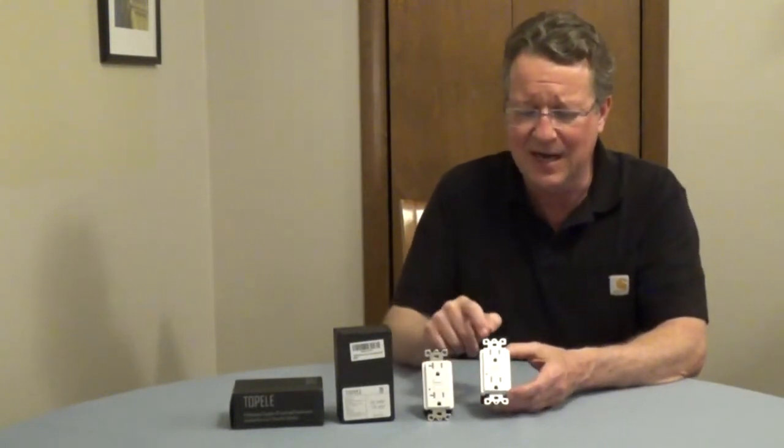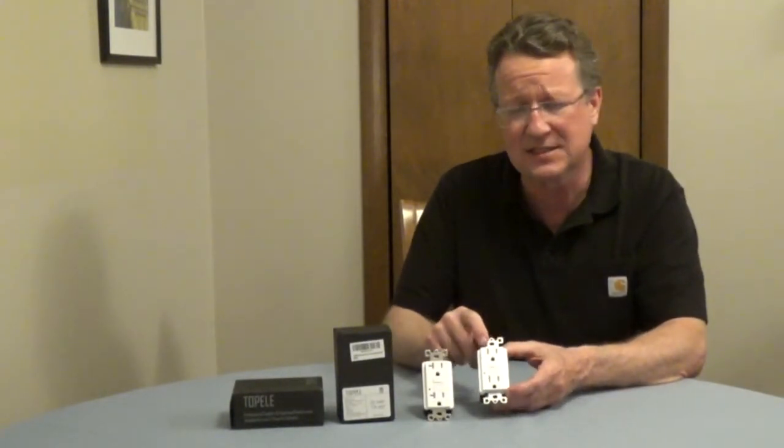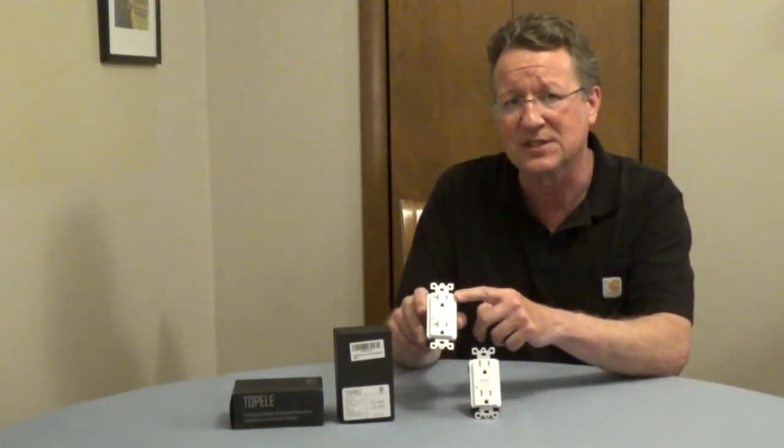A 15 amp GFCI is going to have two parallel slots. A 20 amp GFCI is going to have one slot that's a T-shape.